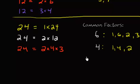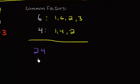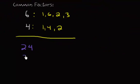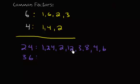Let's try, how about 24 and 36. So factors of 24 would be 1 and 12, or 1 and 24, 2 and 12, 3 and 8, 4 and 6, and that would be it for 24.